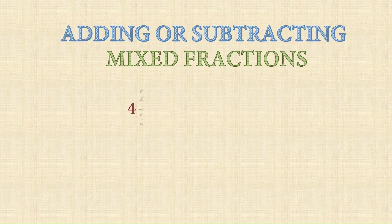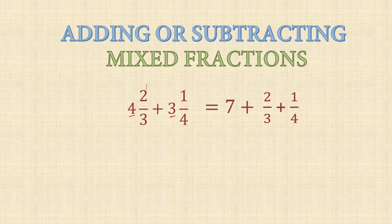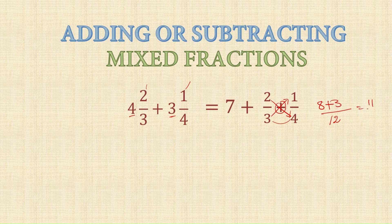Now consider adding mixed fractions. Directly add the whole numbers: 4 and 3 gives 7. Then add the proper fractions 2 upon 3 and 1 upon 4. LCM is 12. Cross-multiplying: 2 into 4 is 8, plus 3 into 1 is 3, giving 11 upon 12. The final answer in mixed fraction form is 7 and 11 upon 12.